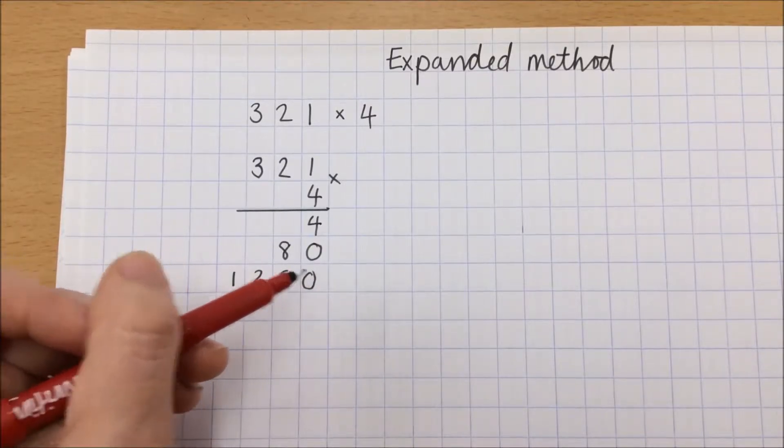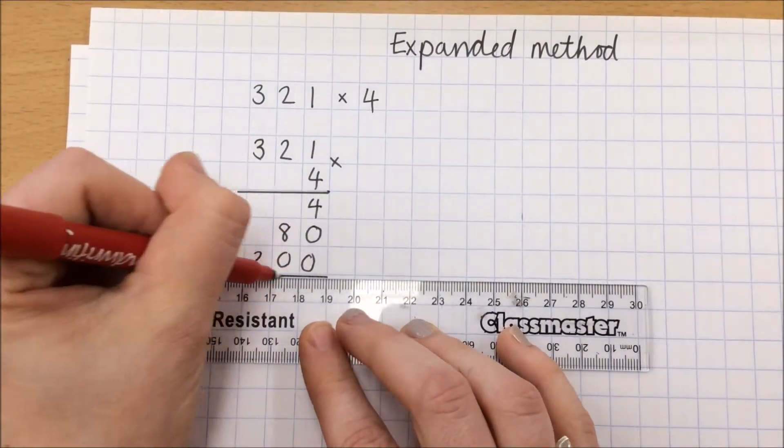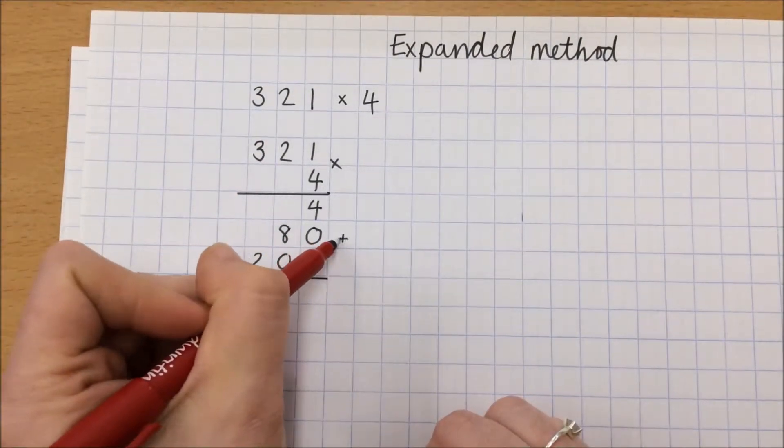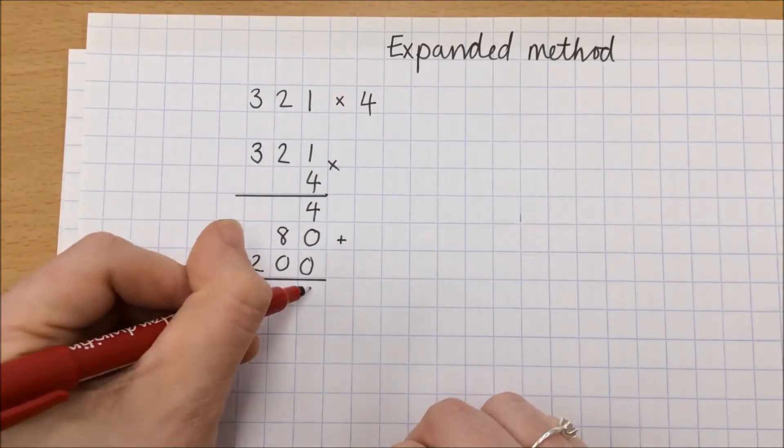And then because it's set up underneath itself, we can now use that as an addition. So 4 plus 0 plus 0 is 4.